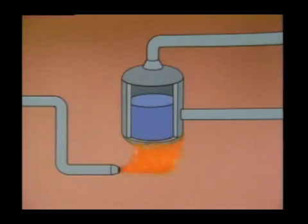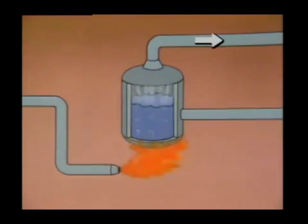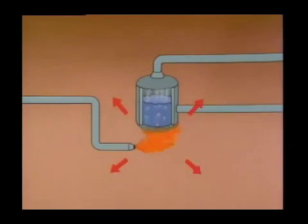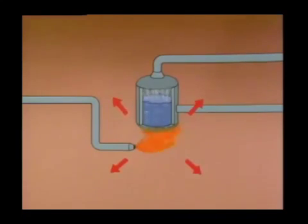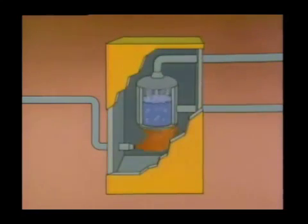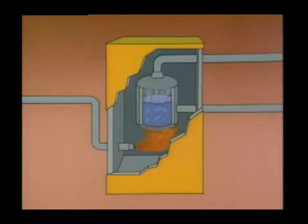Now we have a boiler that can heat water, produce steam, and route it out of the shell to where it's required. But this design is still not as efficient as it could be. With this design, much of the heat in the combustion area escapes to the atmosphere. This heat is wasted because it doesn't go toward the production of steam. By adding an insulated casing, we can minimize the heat loss. But this creates another problem.